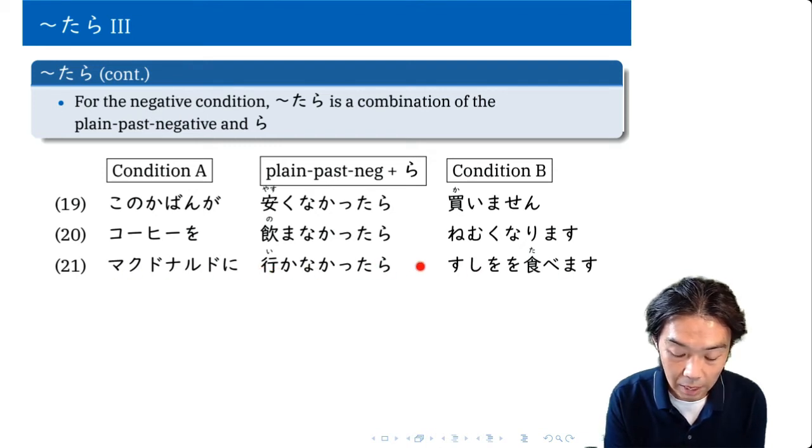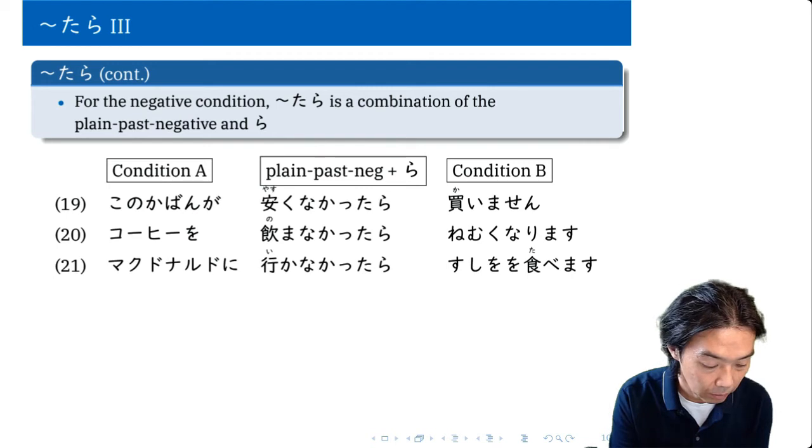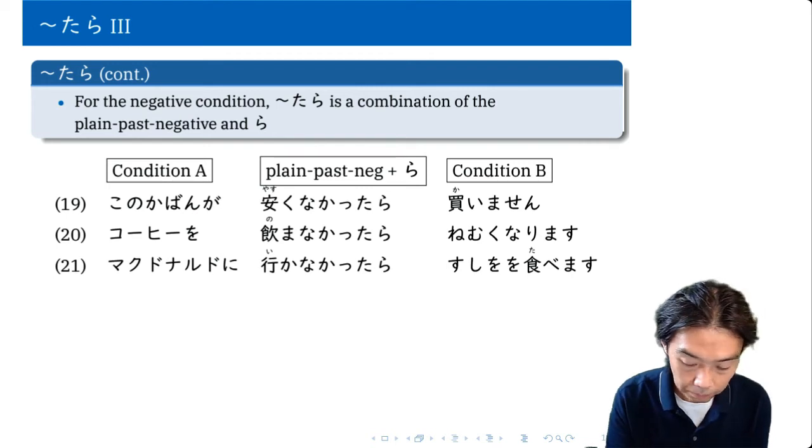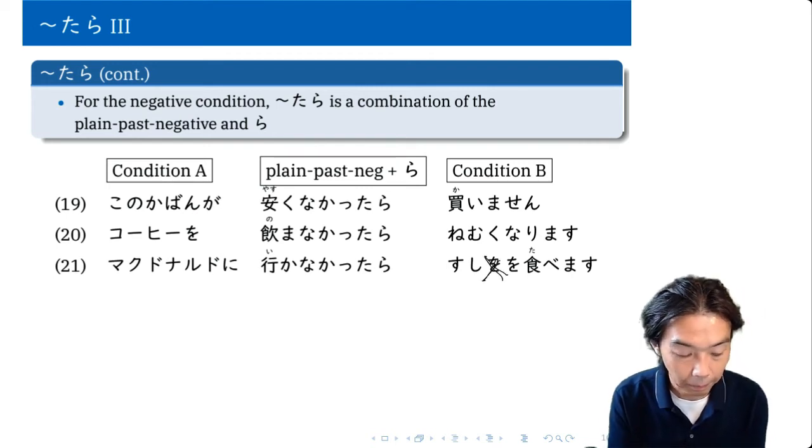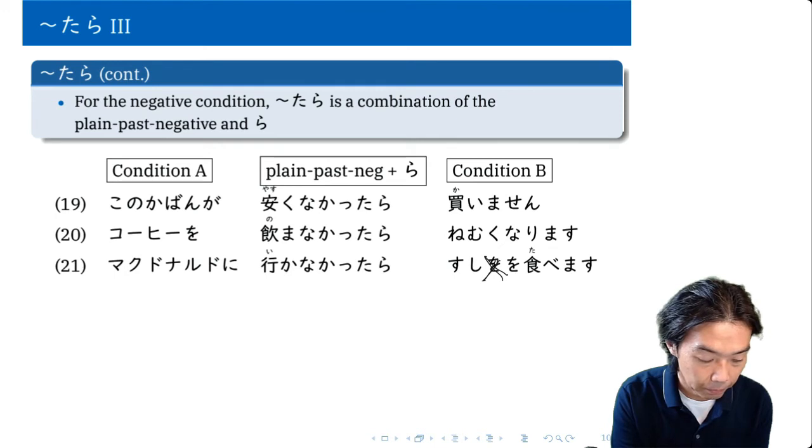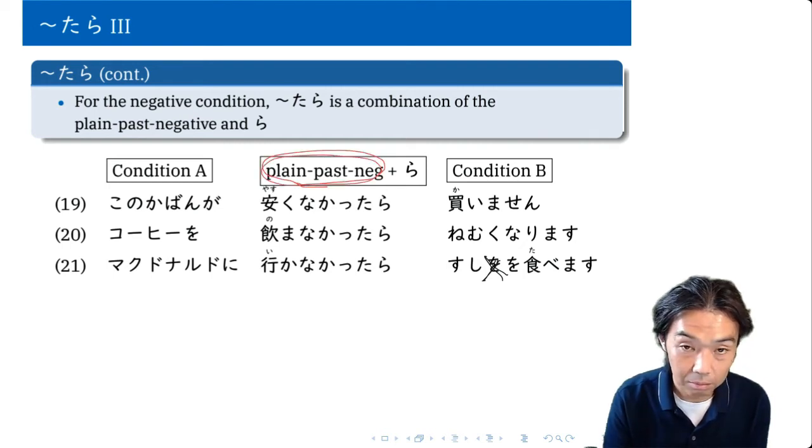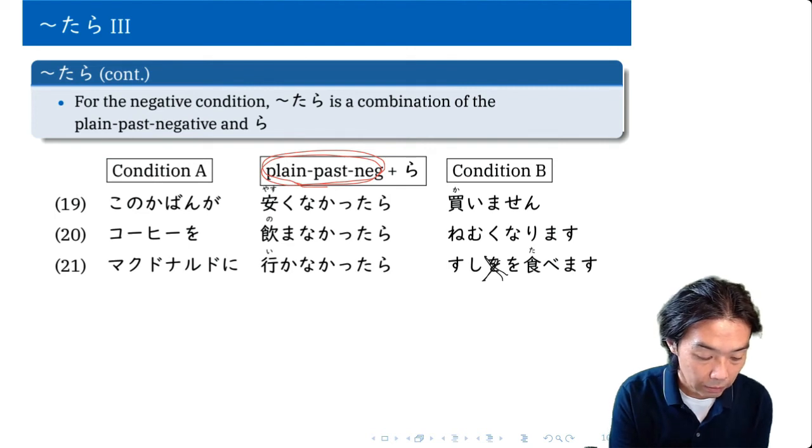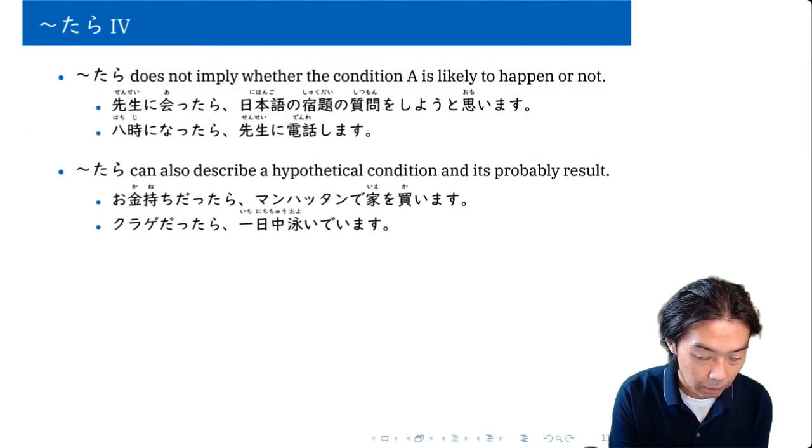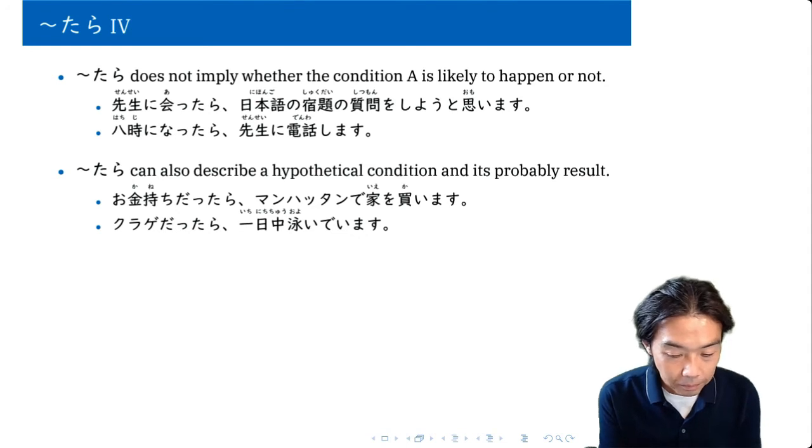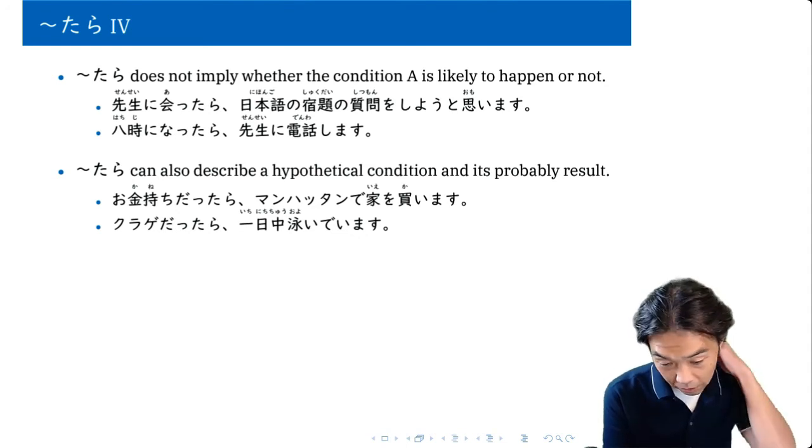マクドナルドに行かなかったら寿司を食べます. If I don't go to McDonald's, I will eat sushi. There's a typo here. For the negative conditional, we use plain past negative instead of Ta form.